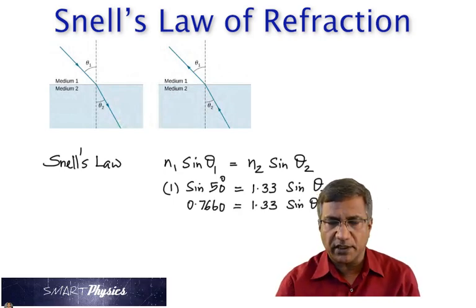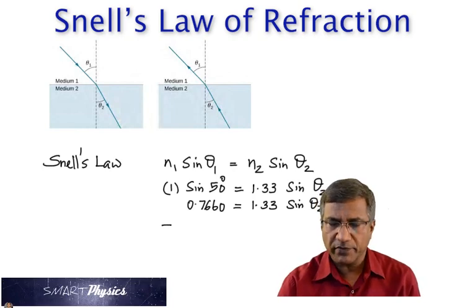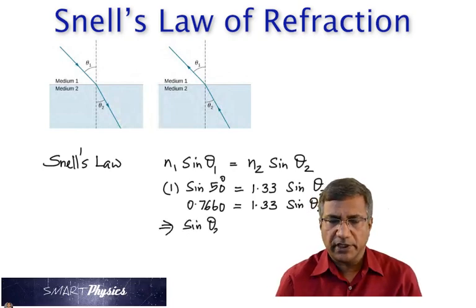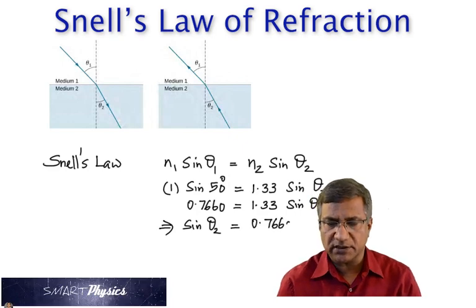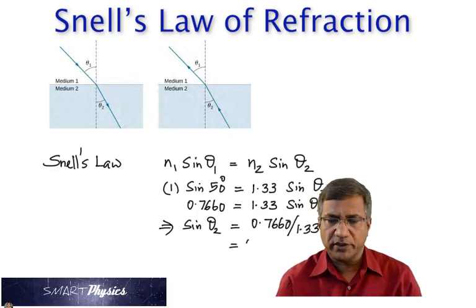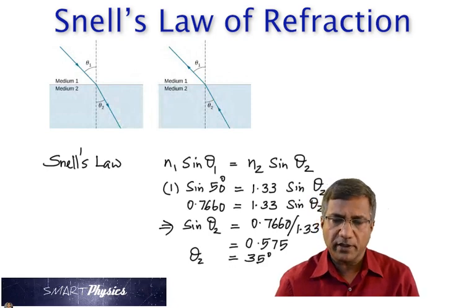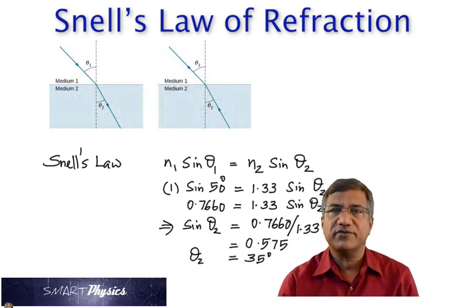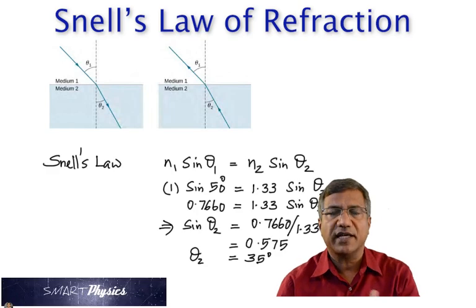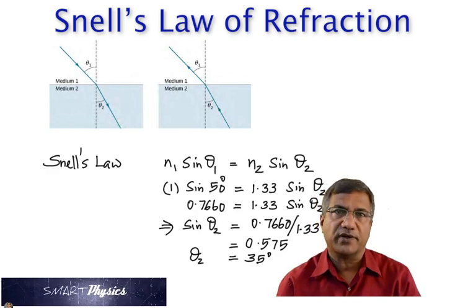So, mathematically, sin 50 gives 0.7660. And sin theta2 is 0.7660 divided by 1.33, which gives 0.575. Take the sin inverse of that, you get 35 degrees.